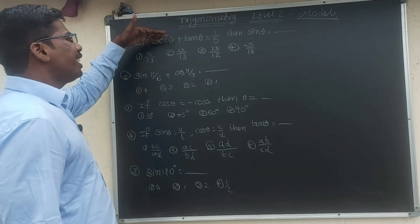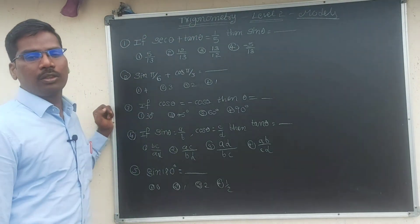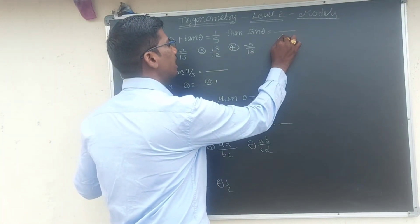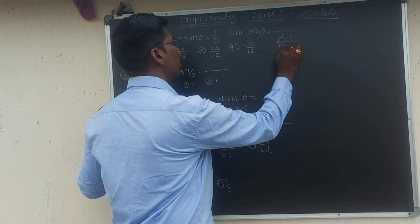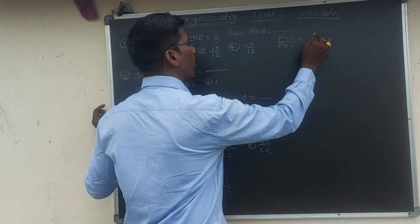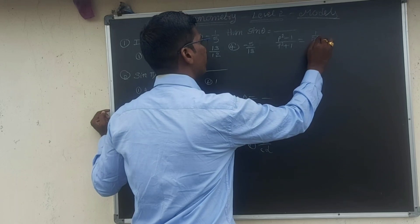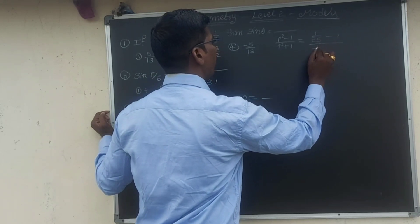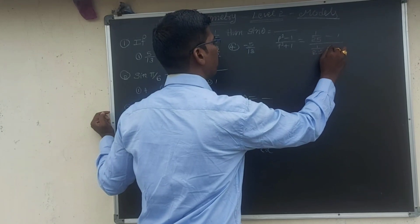Now, sec θ plus tan θ is equal to 1 by 5. Sin θ is equal to sin θ. So, let us apply the formula: p squared minus 1 by p squared plus 1. The p value is already given as 1 by 5.